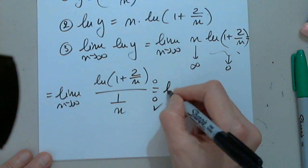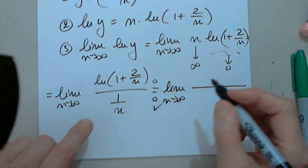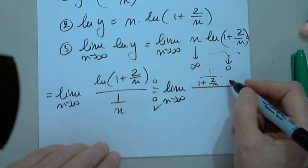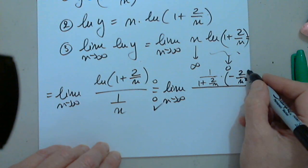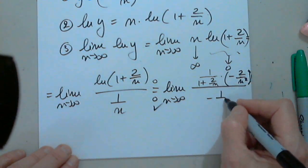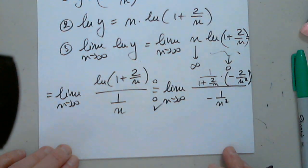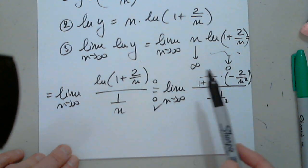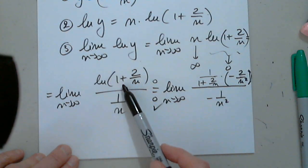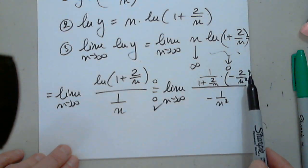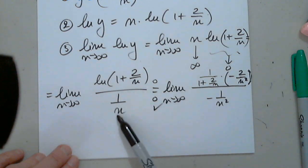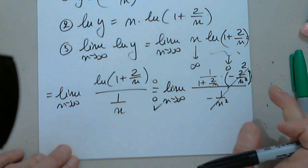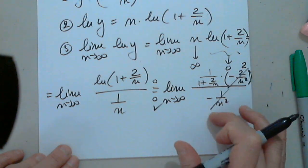I differentiate the top: natural log of (1 + 2/n) prime is 1 over (1 + 2/n) times the inner function prime, which is negative 2 over n squared. The denominator prime is negative 1 over n squared. Note that 1 prime is 0 and 2/n prime is negative 2 over n squared. The negative 2 over n squared divided by negative 1 over n squared simplifies, and everything cancels except the 2.